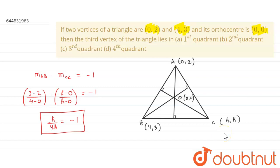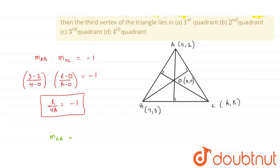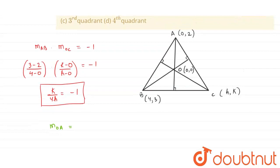So the point (H, K) will either lie in the second quadrant or in the fourth quadrant. Now, if we find the slope of line OA — O is (0,0) and A is (0,2) — the slope is (2 − 0)/(0 − 0), which comes to infinity. Now, line OA is perpendicular to BC.